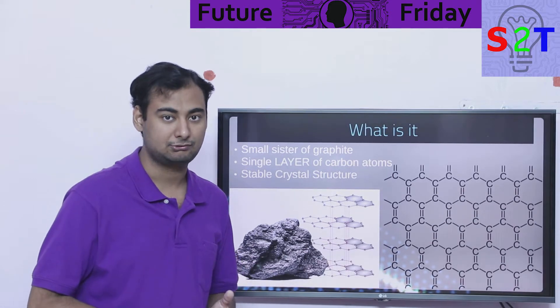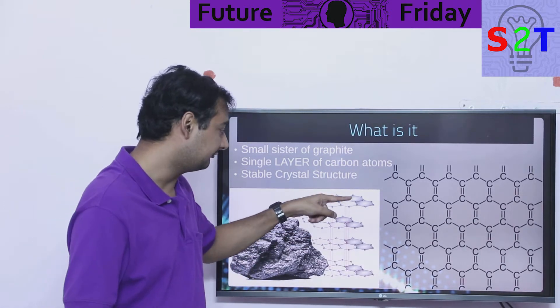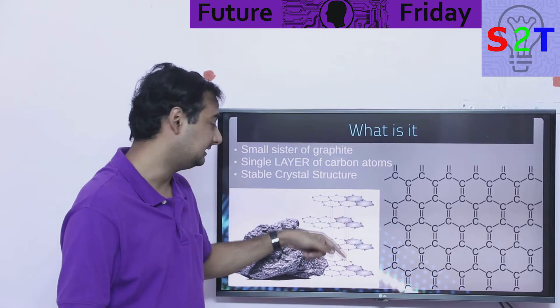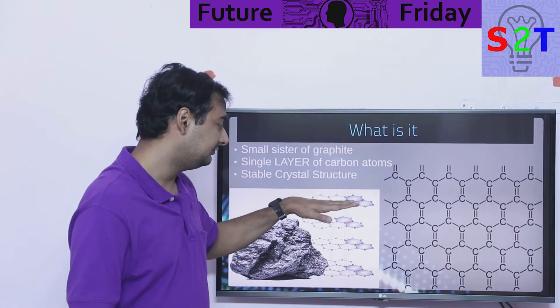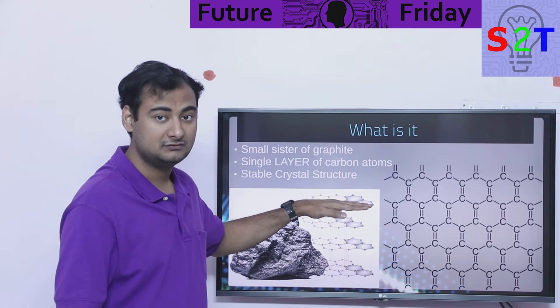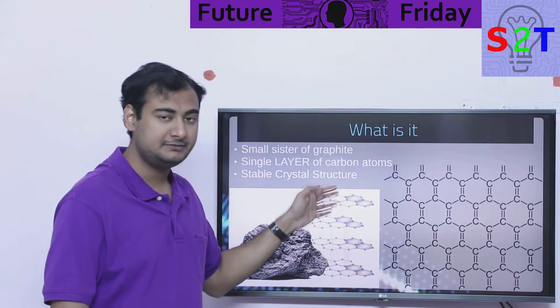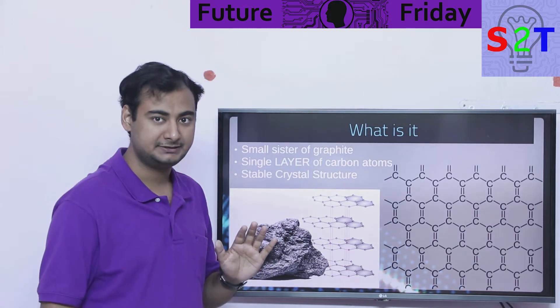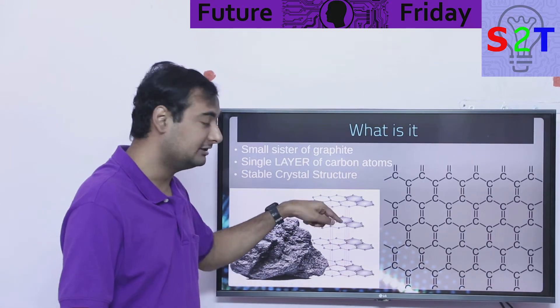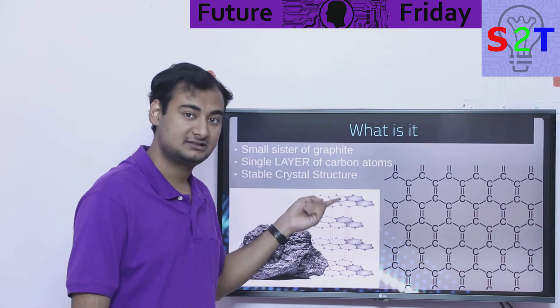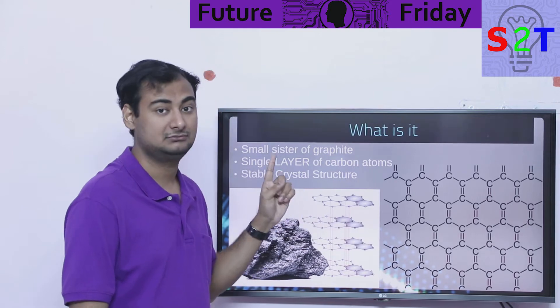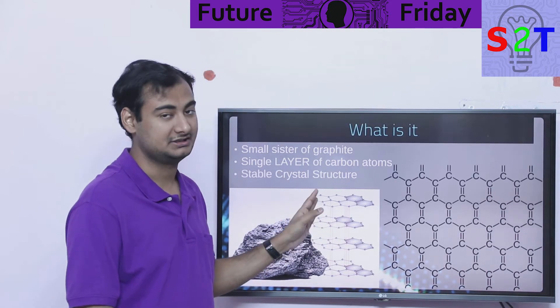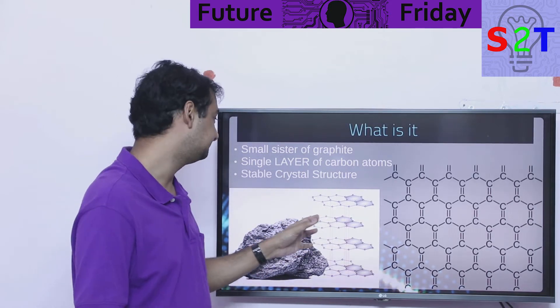That weak bond is why graphite holds itself together and doesn't fall apart like dust or powder. But if you can get one of those layers independent — completely independent — and it double-bonds against itself, it will become graphene.